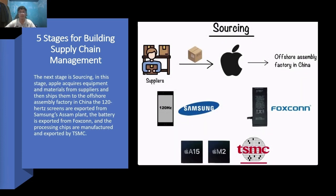The next stage is sourcing. In this stage, Apple acquires equipment and materials from suppliers and then ships them to the offshore assembly factory in China. The 120Hz screens are exported from Samsung's OSAT plant, the battery is exported from Foxconn, and the processing chips are manufactured and exported by TSMC. At this stage, you are primarily concerned with developing strong relationships with raw material suppliers.